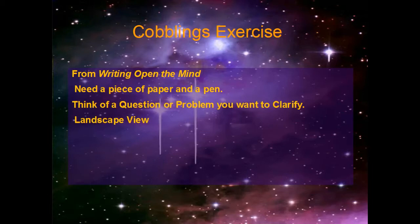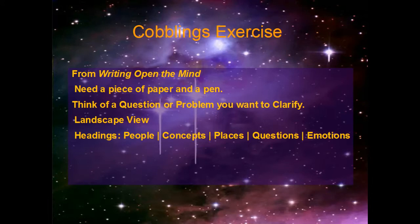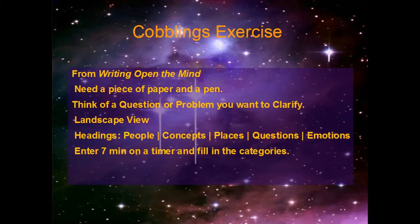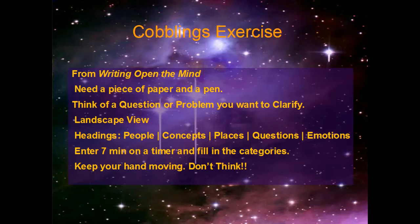Take the piece of paper and turn it sideways — landscape view. At the top of the paper, put these headings: people, concepts, places, questions, and emotions. I usually take about seven minutes on a timer and fill in the categories as fast as I can. The important thing here is to keep your hand moving — don't think. If you have to write a shopping list in order not to think, that's fine; go ahead and write it in whatever category you see fit. The categories help jumpstart your mind, but they aren't solid categories — put whatever feels right in any particular category. Now set your timer for seven minutes, and I'll come back at that point and we'll continue with this exercise.